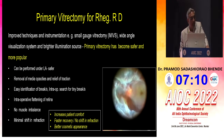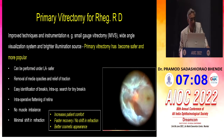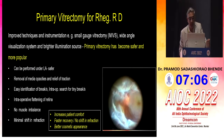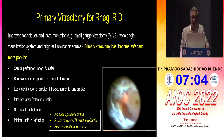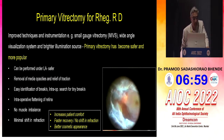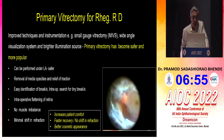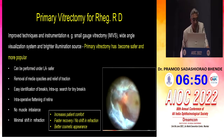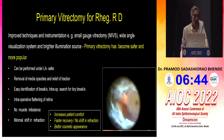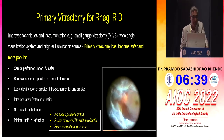With improved technique and technology — MIVS, wide-angle visualization systems, and bright illumination — primary vitrectomy has become safer and more popular. Advantages include: it can be performed under local anesthesia, removes media opacity, relieves all traction, so you are unlikely to miss any breaks. You can intraoperatively search for tiny breaks, ensure the retina is flattened, there is no muscle imbalance, and there is minimal shift of refraction. It increases overall patient comfort, faster recovery, and better cosmetic appearance.